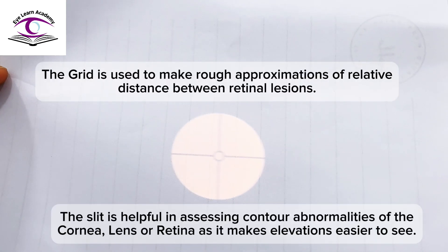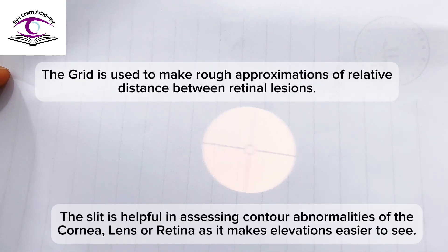You use the white beam to examine a dilated pupil, and a small or medium beam to examine the constricted pupil.